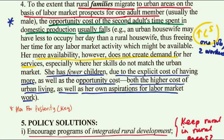To the extent that rural families migrate to urban areas on the basis of labor market prospects of one person — usually the adult male — the opportunity cost of the second adult's time spent in domestic productivity usually falls. The female in the urban area will have fewer children due to the explicit cost of having more, as well as the opportunity cost. In the urban area, kids have to go to school and be dressed decently, and the mother would also be expecting to have options of her own. Therefore, the opportunity cost of her time matters, so you expect smaller families in urban areas.